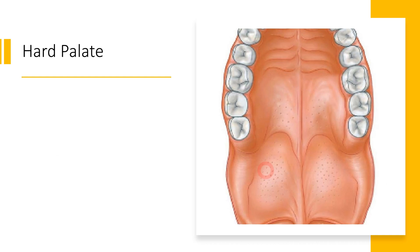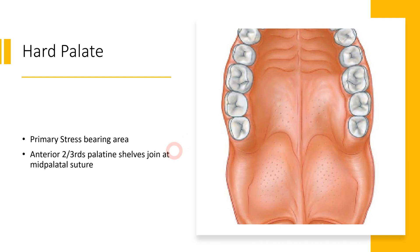The second primary stress bearing area in maxilla is called the hard palate. As you can see in this diagrammatic picture, we have the hard palate and just posterior to it we have the soft palate. The hard palate normally forms when the palatine shelves approximate towards each other and form the mid-palatal suture. The hard palate basically forms the basal seat area where the denture base seats and provides the primary support for the intraoral prosthesis.